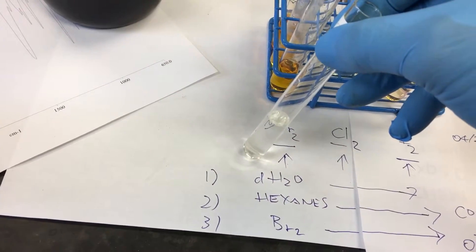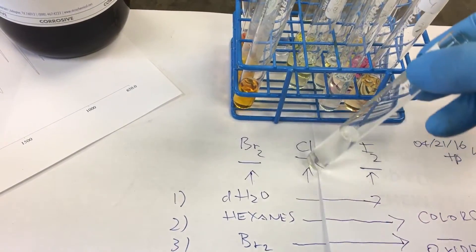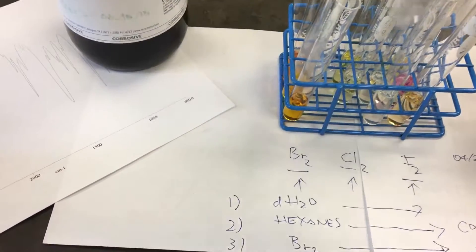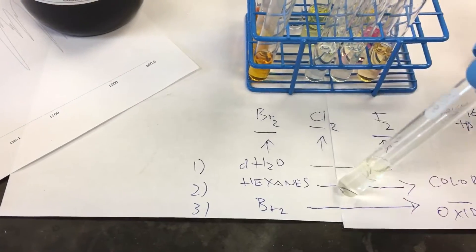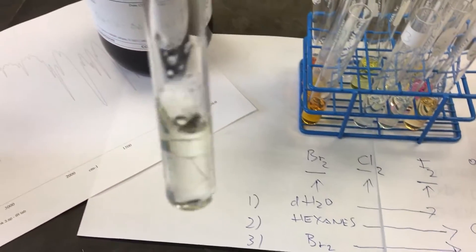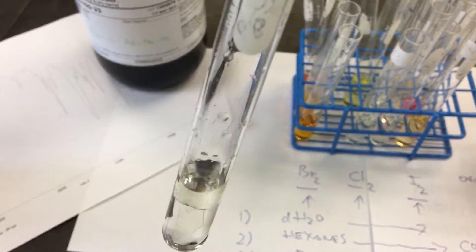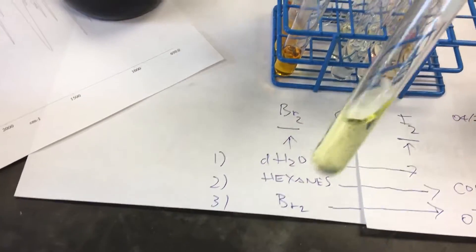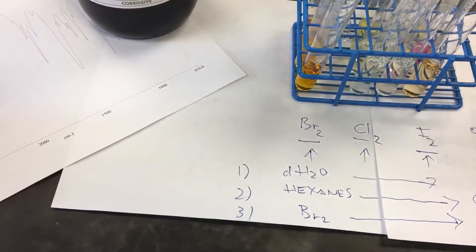Let's see. So this one, deionized water with chlorine, clear. One hexane with chlorine, yellow too then, right? Do you see the top layer? It's yellow. Alrighty.